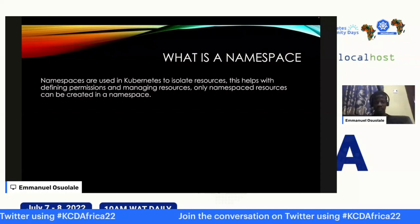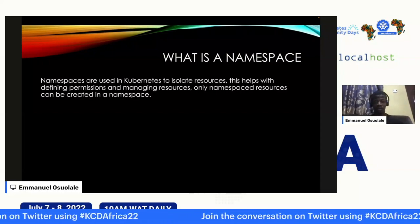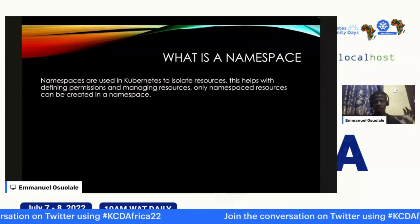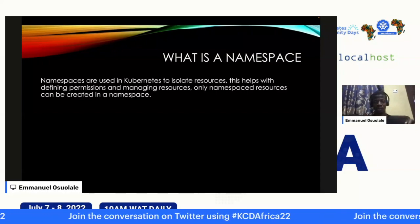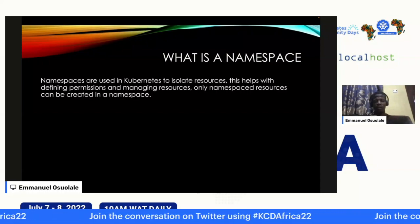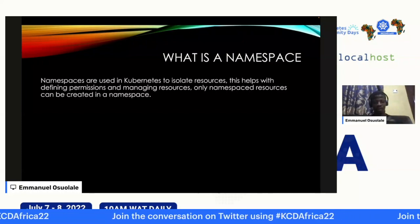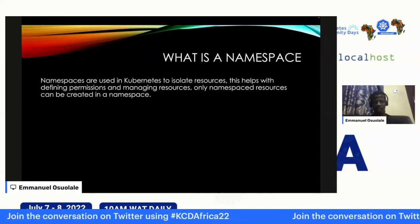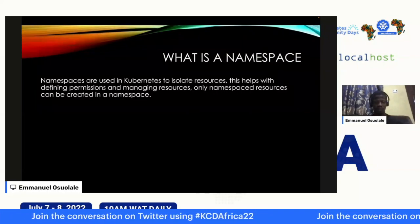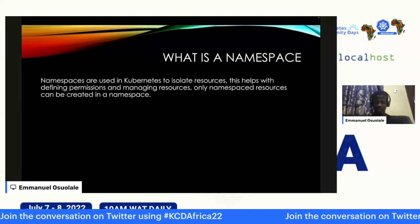What is a namespace? A namespace is used in Kubernetes to isolate resources, and it can also help with defining and managing permissions. In a namespace, only namespaced resources can be created. There are some resources that are not namespaced — like a node, which cannot be created in a namespace. But a persistent volume, a ConfigMap — these are namespace resources, so they can be created in a namespace.